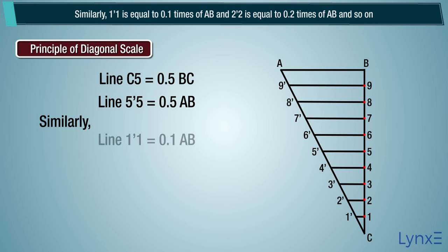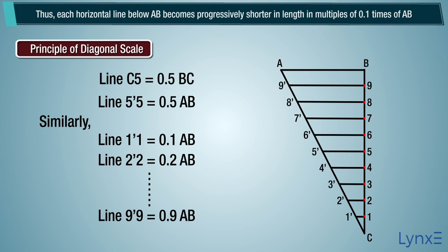Similarly, 1'1 is equal to 0.1 times AB and 2'2 is equal to 0.2 times AB and so on. Thus, each horizontal line below AB becomes progressively shorter in length in multiples of 0.1 times AB.